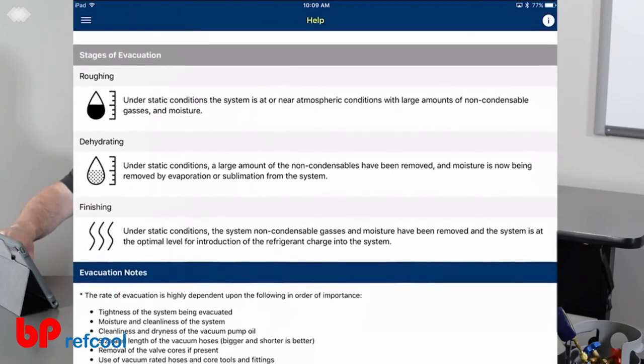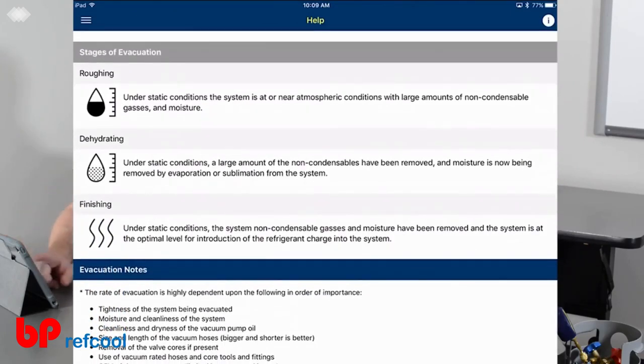These are the icons you'll see on the main display. This is our roughing vacuum, and this is where we're doing most of our work, about 90% of our work, and then dehydrating, and then our finishing vacuum.